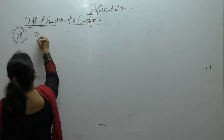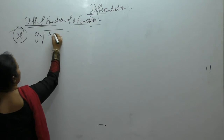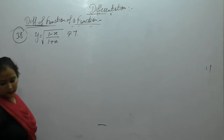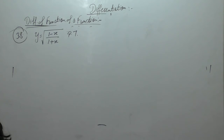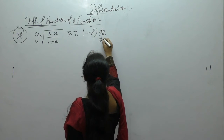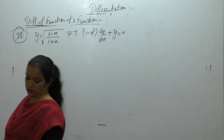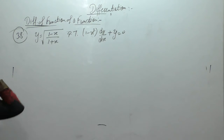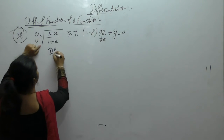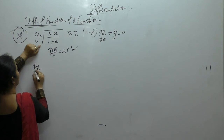Next problem: if y equals √((1 minus x) upon (1 plus x)), prove that (1 minus x²) dy/dx plus y equals 0. Y equals this term, so differentiate with respect to x. dy/dx.